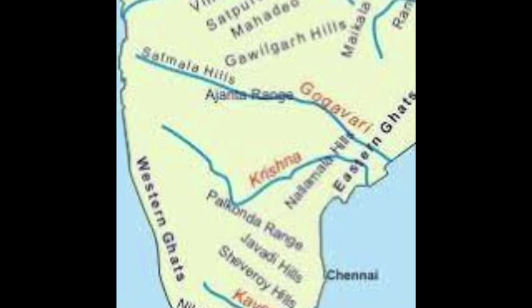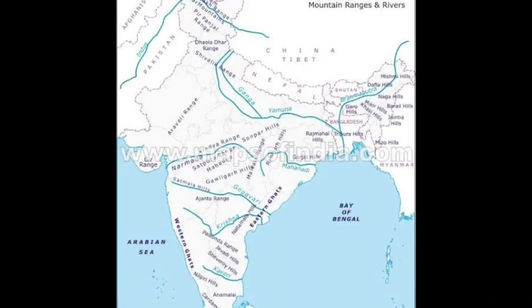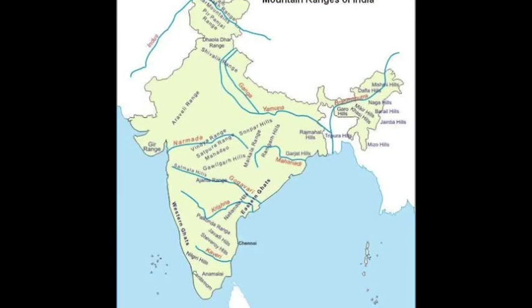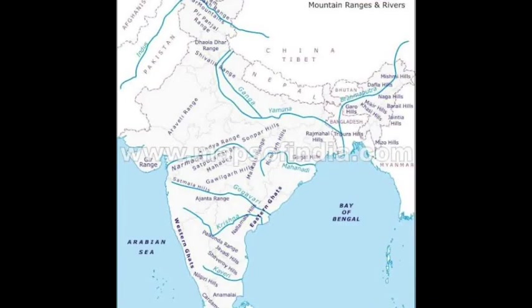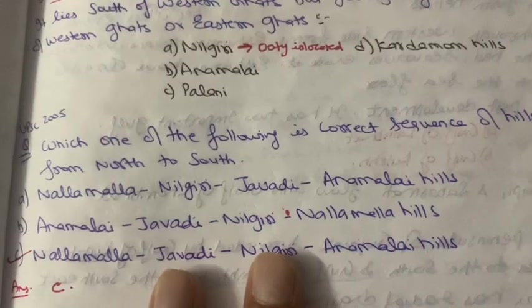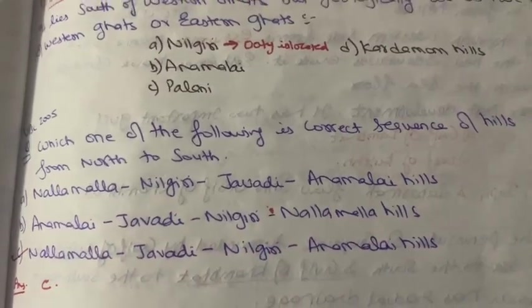Anamudi is the highest peak in the Western Ghats — please review the Western Ghats module before starting Eastern Ghats. Going from north to south, the sequence is: Nallamala (a forest), then Jawadi, then Nilgiri Hills (in Tamil Nadu), and then Annamalai Hills. You need map knowledge to answer such questions. I'll post the map. I think you are clear with Eastern Ghats now — thank you.